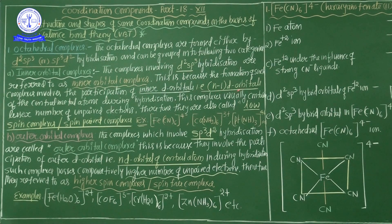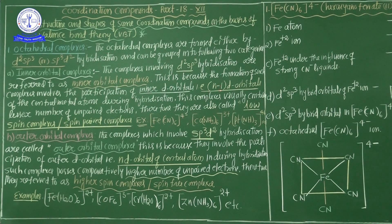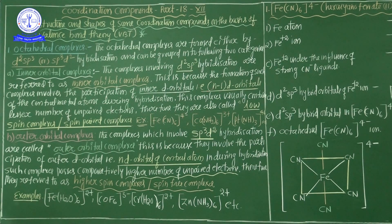In inner orbital complexes, specifically the (n-1)D orbitals — from the penultimate shell — are involved in hybridization. The last shell is the n shell; the last-before shell (penultimate shell) is the n-1 shell. So the D orbitals from the penultimate shell only are involved in the hybridization of inner orbital complexes.